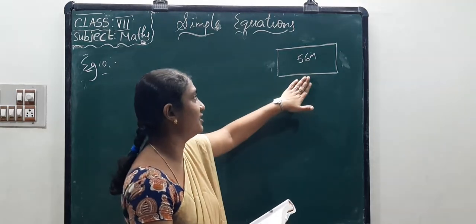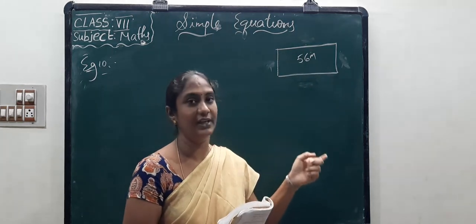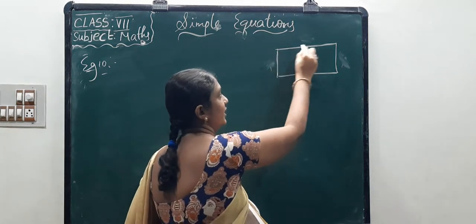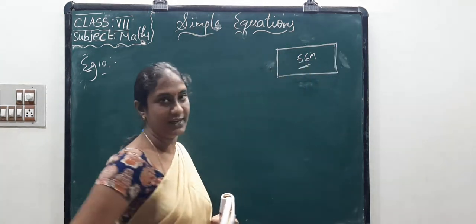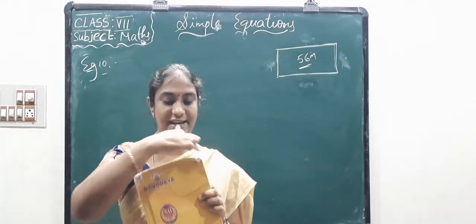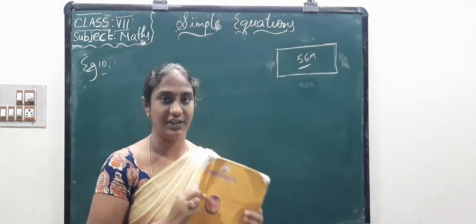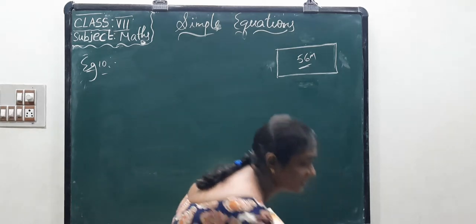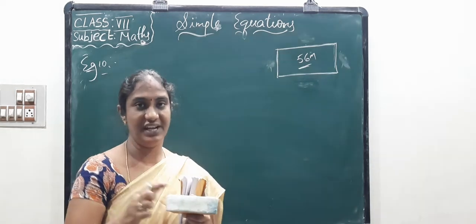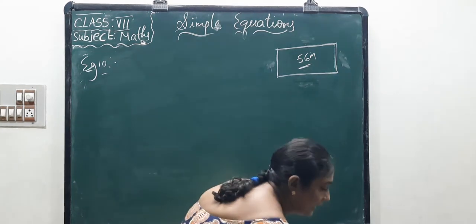The boundary of a rectangle is called its perimeter. For example, the edge of a book or the boundary of a duster — that outline is the perimeter. For any figure there must be a boundary, and that is the perimeter.